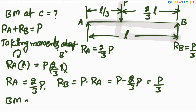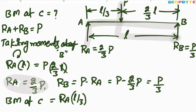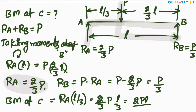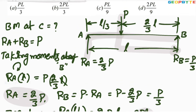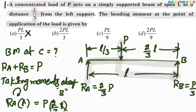Bending moment at C = RA × (L/3) = (2P/3) × (L/3) = 2PL/9. That is the bending moment under the load. Looking at the options: option A (PL/3) — not correct; option B (2PL/3) — not correct; option C (PL/9) — not correct; option D (2PL/9) — absolutely correct. I hope you all understood.